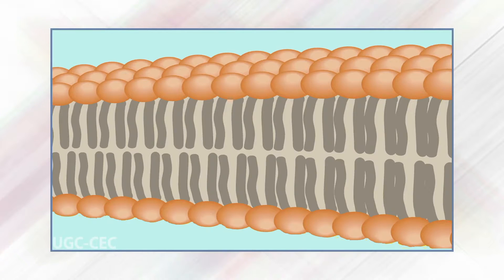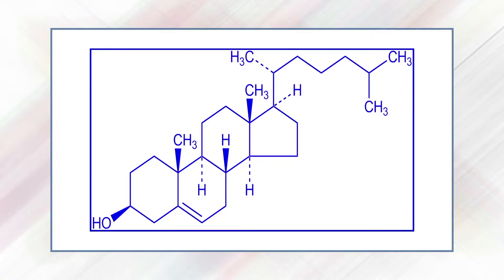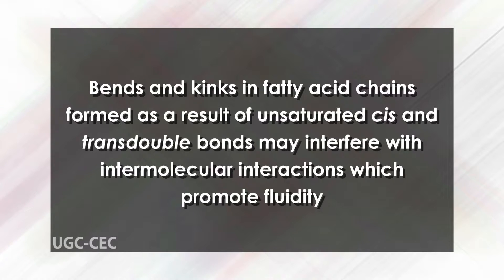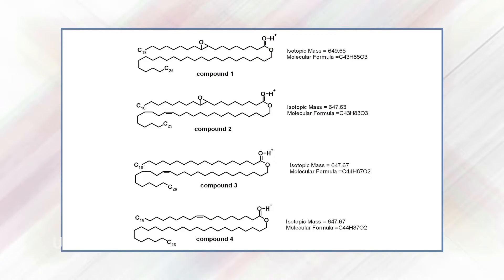The fluidity of membranes determines the extent to which molecules can be transported and signals can be transduced through the membrane. Membrane fluidity is a function of its fatty acid and cholesterol content. Long fatty acid chains are able to form stronger intermolecular interactions, which restrict fluidity. Bands and kinks in fatty acid chains formed as a result of unsaturated cis and trans double bonds may interfere with intermolecular interactions, which promotes fluidity. Membrane fluidity can be controlled by varying the number of double bonds and the length of fatty acid chains.